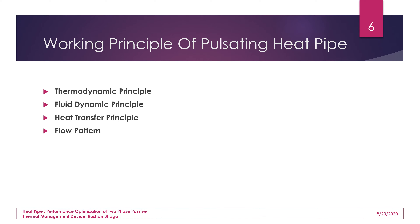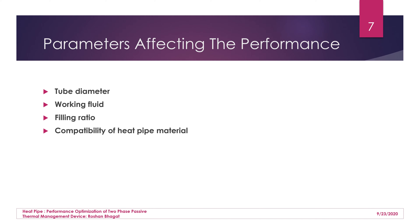A few parameters affect the performance of the closed loop pulsating heat pipe. First is tube diameter — the pulsating heat pipe has a very small diameter, around 2 to 3 mm, enabling capillary action and alternate liquid and vapor slug movement from evaporator to condenser. If the diameter is too large, pulsating action will not take place; if too small, heat transfer may not be sufficient.